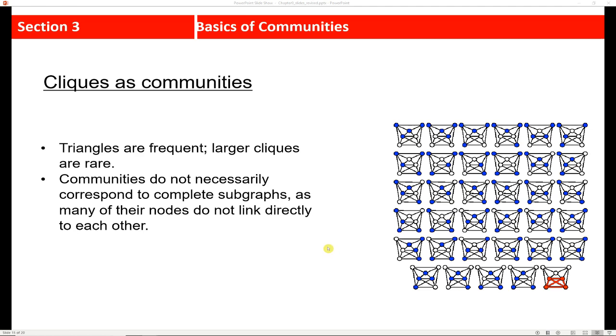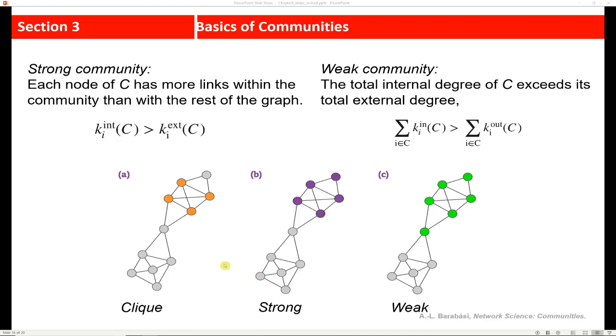So typically in social networks, we'll see a lot of triangles. So groups of three that are completely connected. Larger cliques are actually pretty rare. And so they're significant when they do come up. And so communities don't necessarily correspond all the time to complete subgraphs, because many of the nodes won't link directly to each other. But you'll still have fairly dense connections. So, so far we have touched on what constitutes a community, what constitutes a clique, so a complete subgraph within a graph.